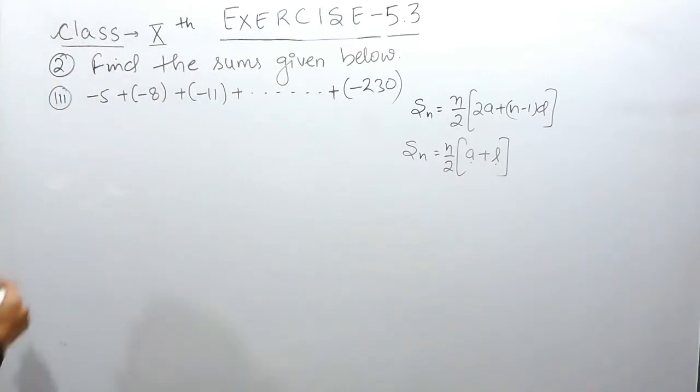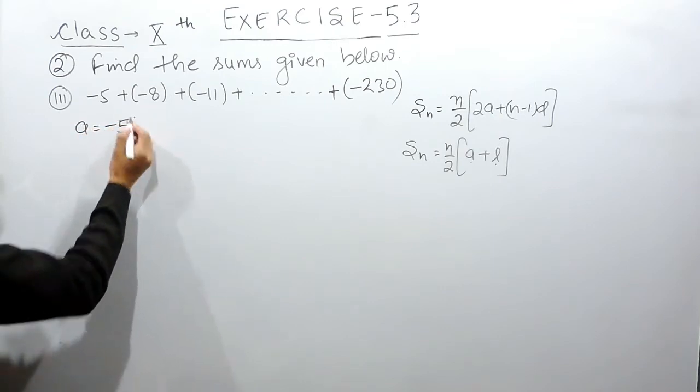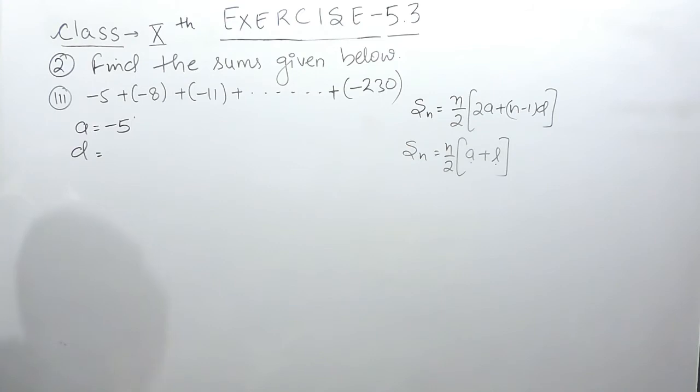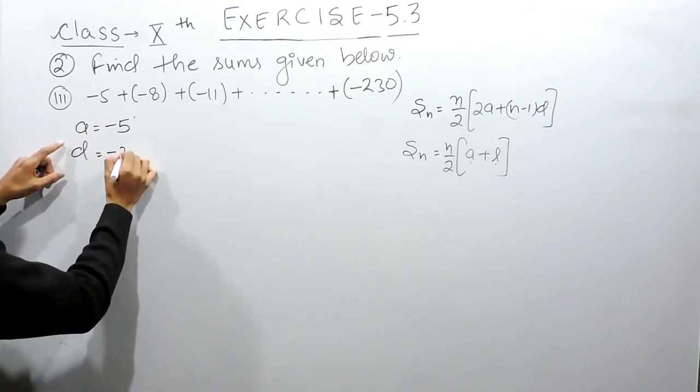So here the first term is given to you as -5, and the common difference here equals -3.